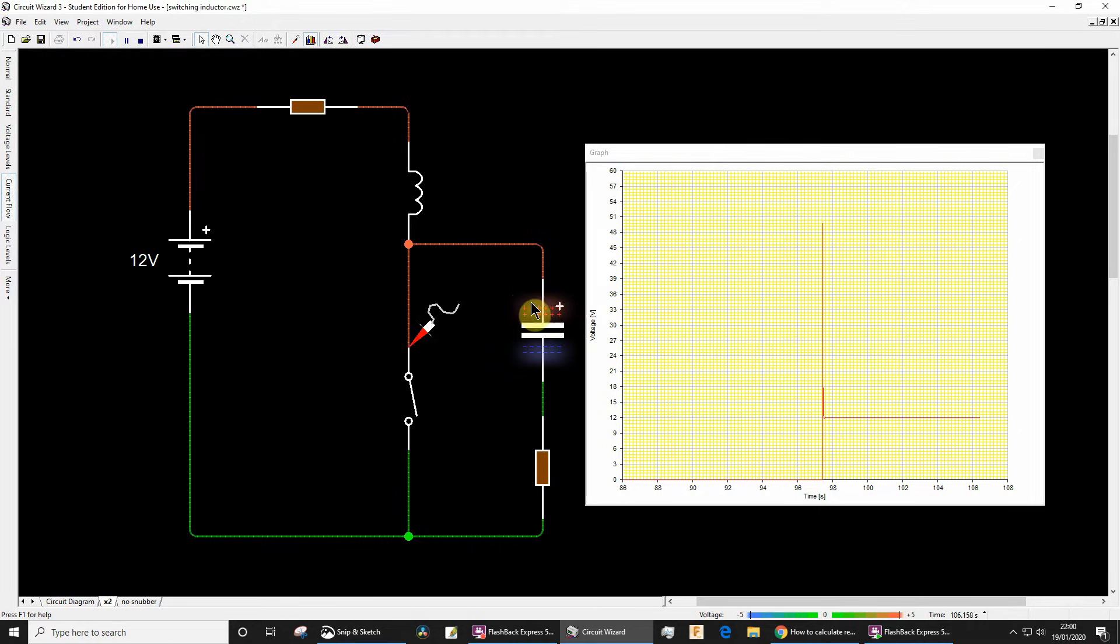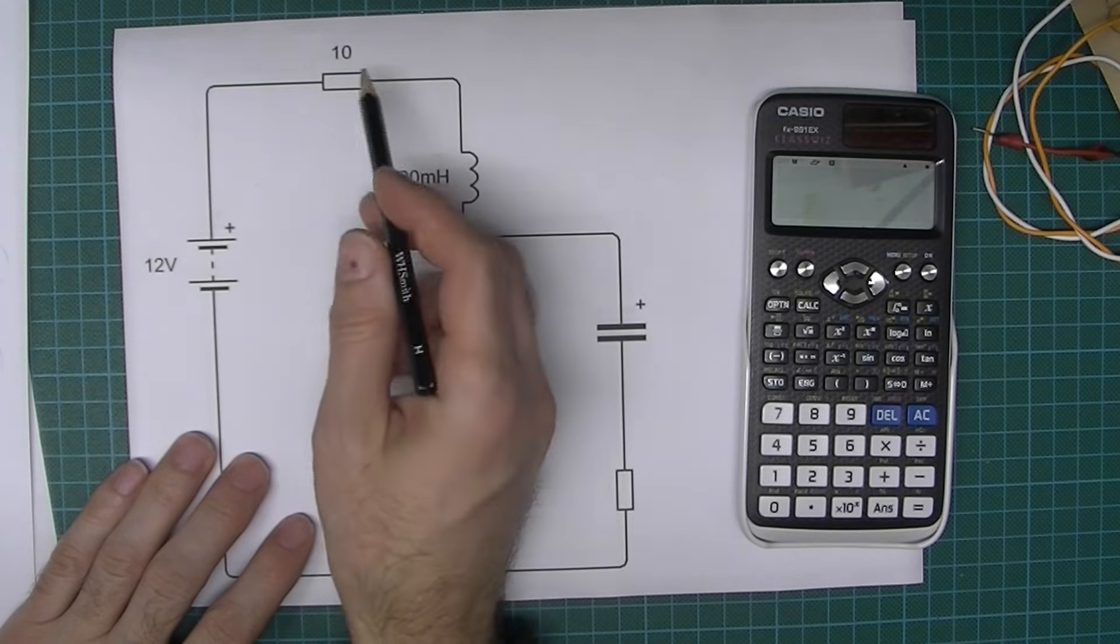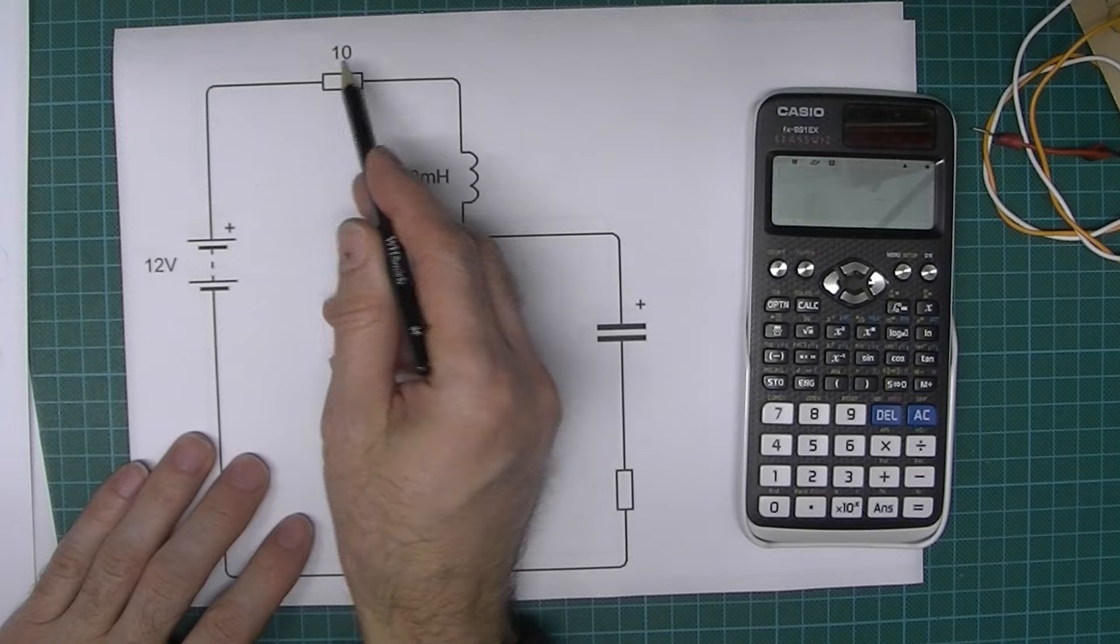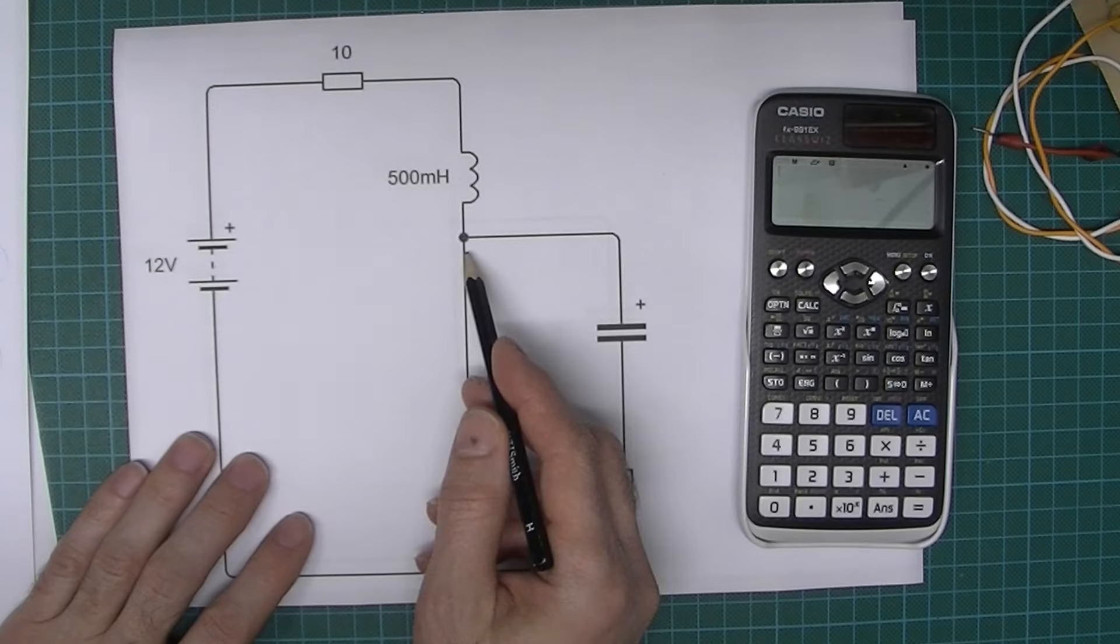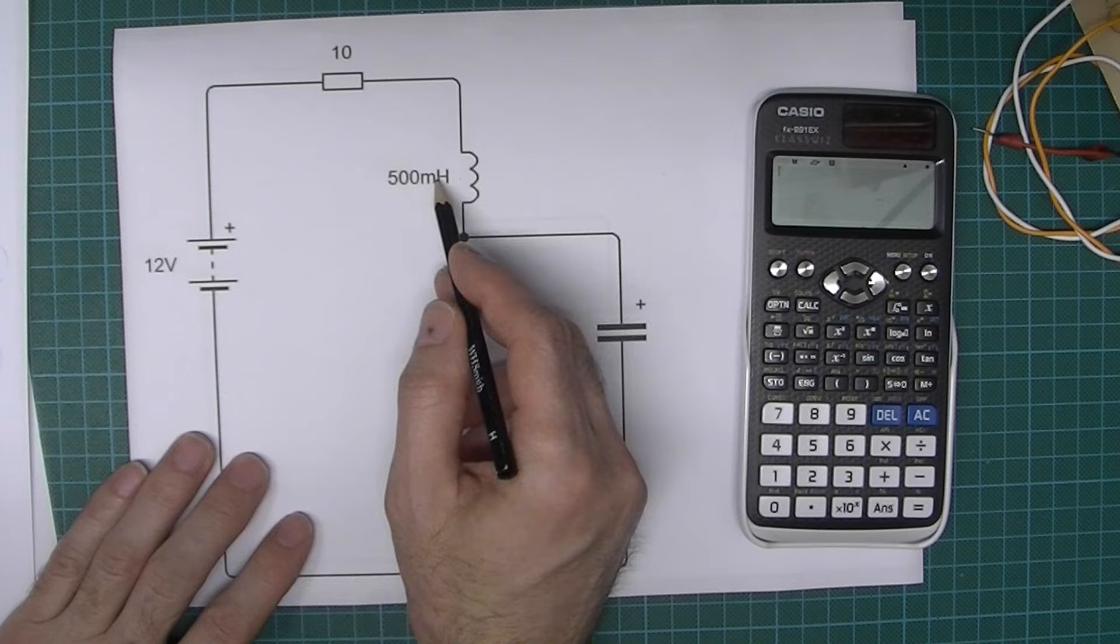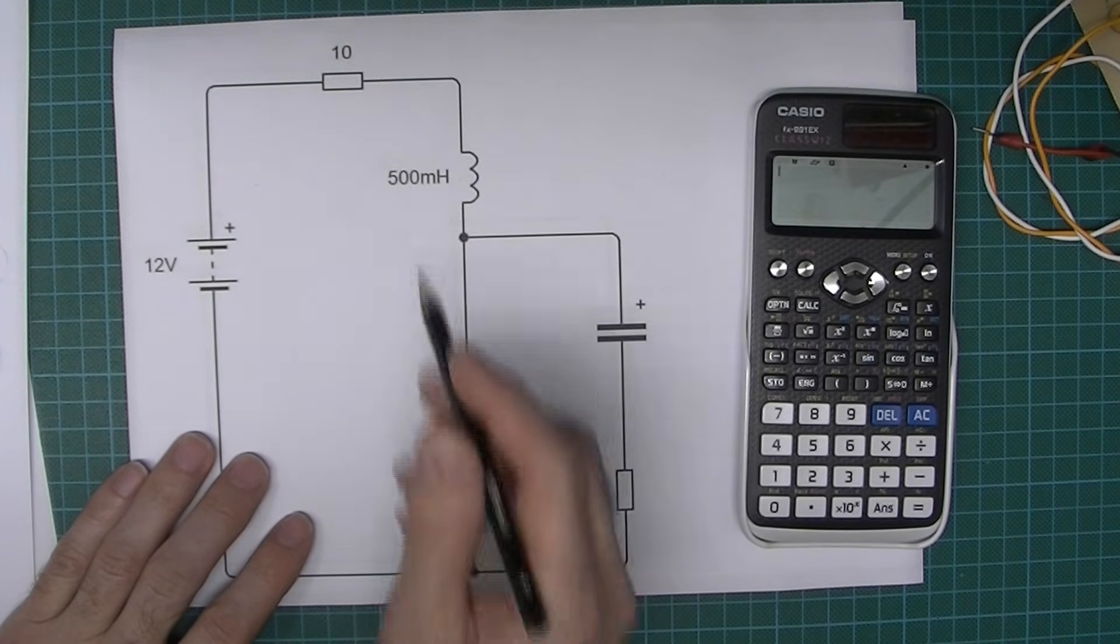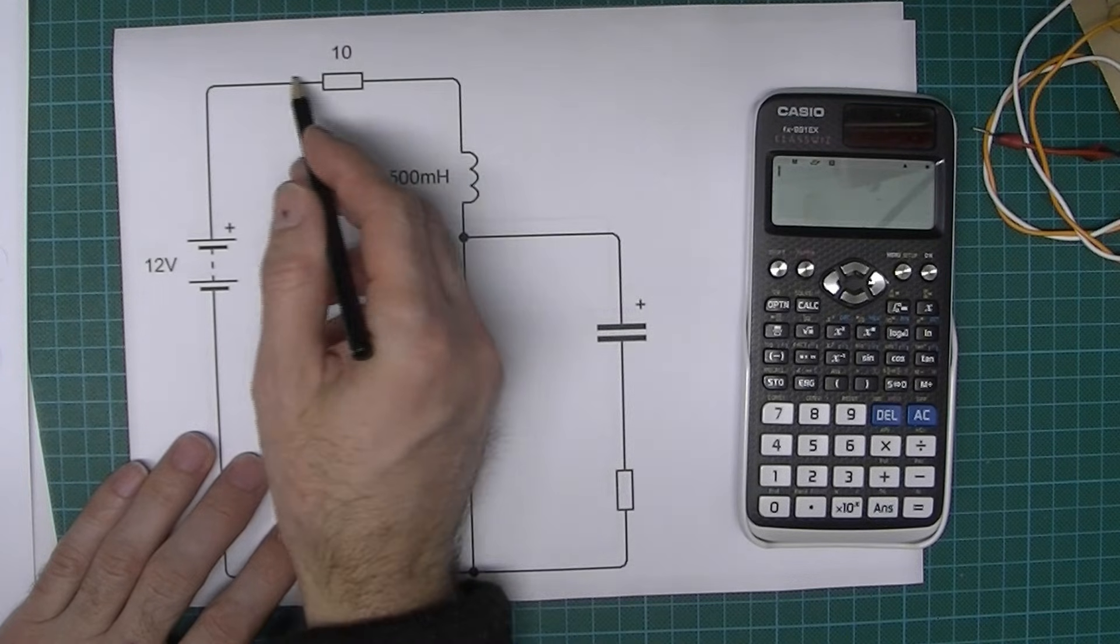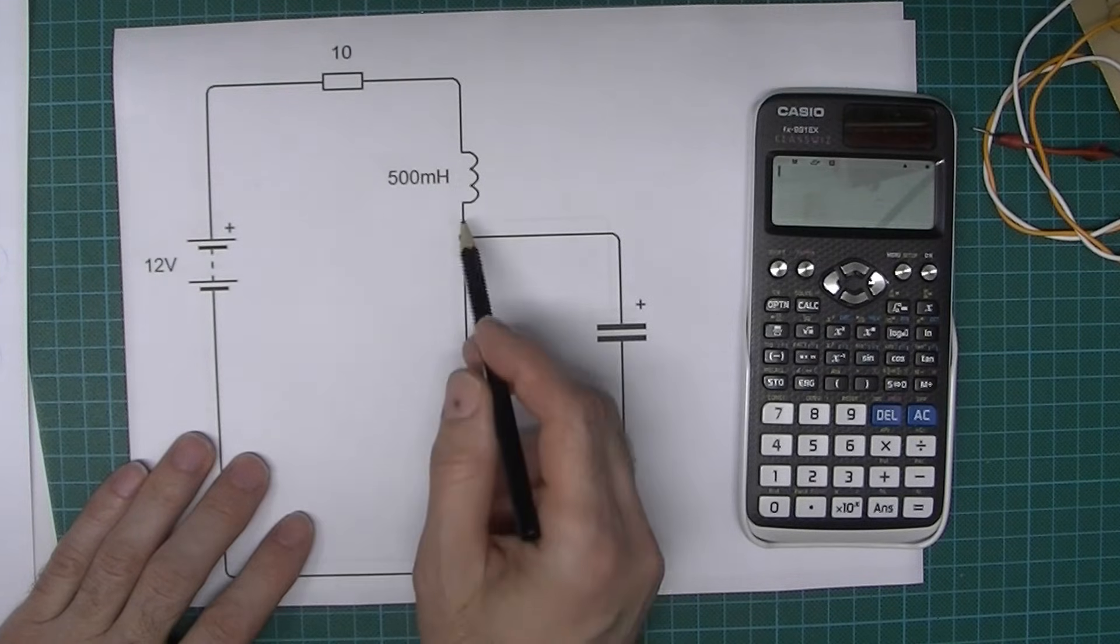In the remainder of the video I'll show you how we can calculate appropriate values for the RC snubber network. Here's our same circuit printed off on paper, but I have specified this time a value for this resistor - remember this resistor is going to limit the current through the coil - and also a coil inductance of 500 millihenries. The first thing we could do is calculate the current that's going to flow both through this resistor and through the coil.